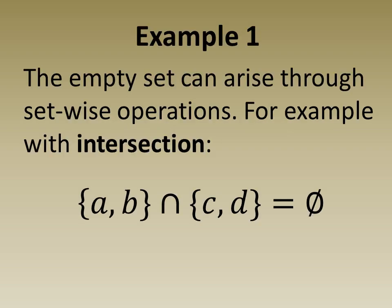In example 1 we see that the empty set can arise through setwise operations. For example, with set intersection below we are looking at the intersection of two disjoint sets, which is the empty set.